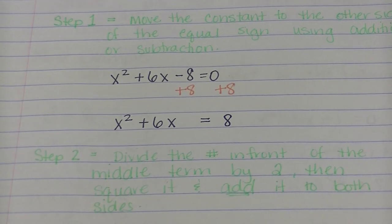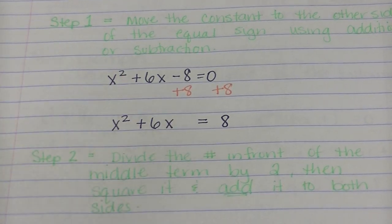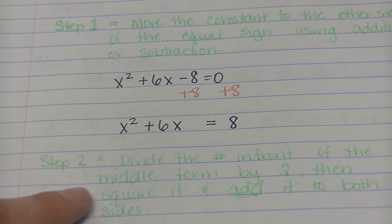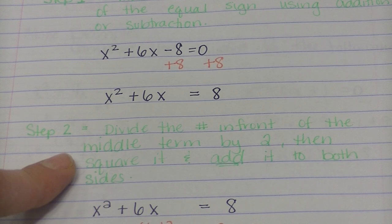So the next thing I'm going to do is I'm going to divide the number that's in front of the middle term. So I'm going to divide this 6 by 2, then I'm going to square it. I'm going to add that number to both sides.